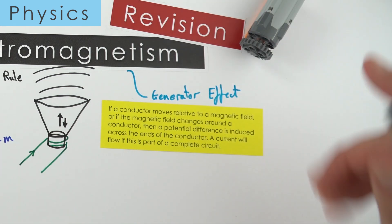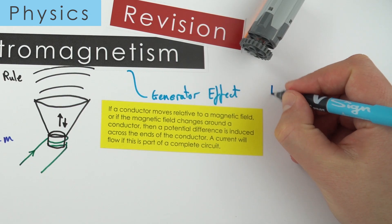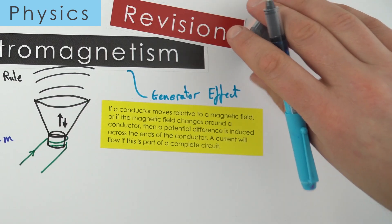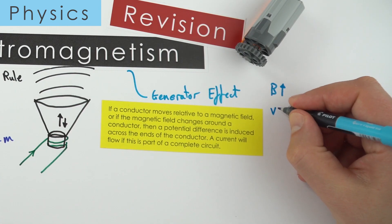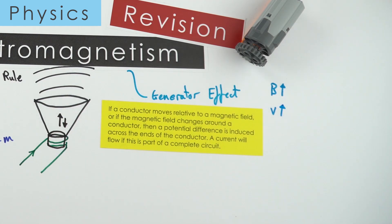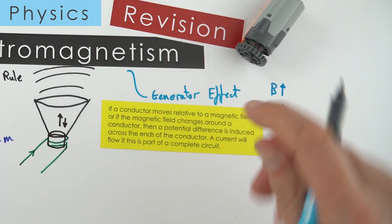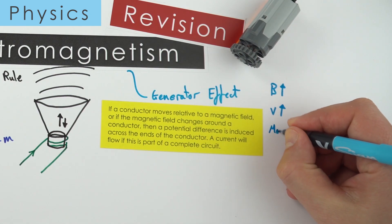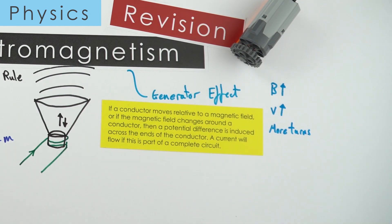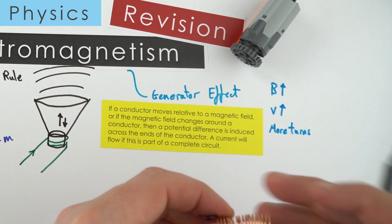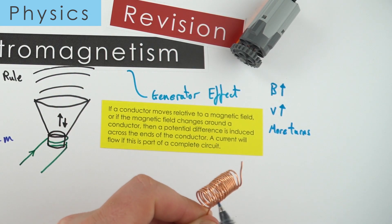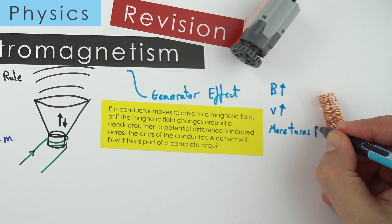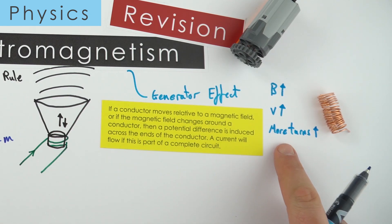How do you make the generator effect bigger — how do we get more electricity out of our generators? We can increase the size of the magnetic field, which causes a bigger voltage. We can also make it move quicker, increasing velocity. And if you have a coil of wire turning inside the magnetic field, you can have more turns — a solenoid with more turns gives a bigger induced potential difference.